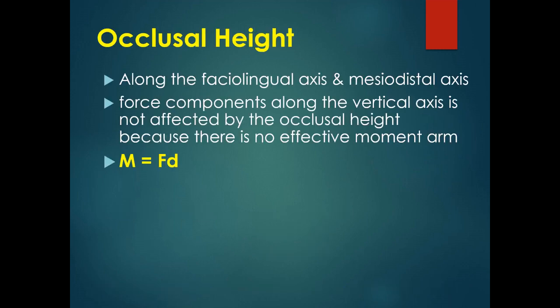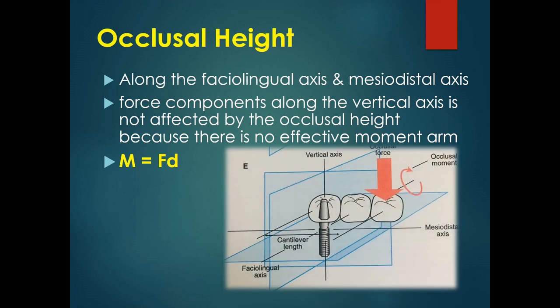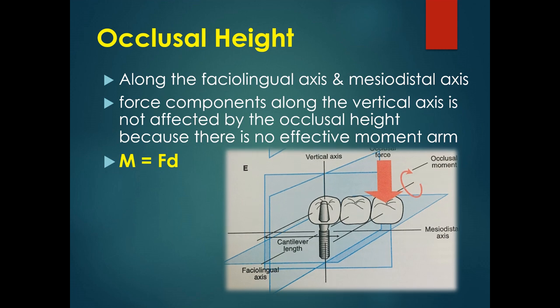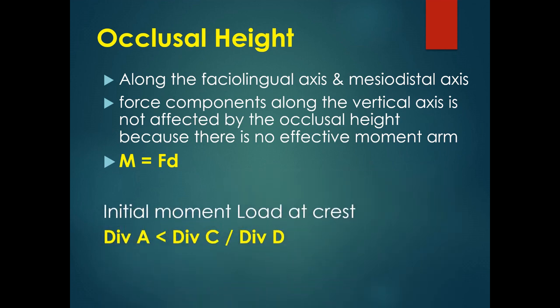The first clinical moment arm is occlusal height, which serves as the moment arm for force components directed along the faciolingual and mesiodistal axes. The force component along the vertical axis is not affected by occlusal height because the perpendicular distance between the line of action of force and the center of the implant is zero, so there is no effective moment arm. However, lateral loads can introduce significant moment arms. In Division A bone, the initial moment arm at the crest is less than that of Division C or D bone because crown height is greater in Division C or D bone, and treatment planning must account for this compromised biomechanical environment.